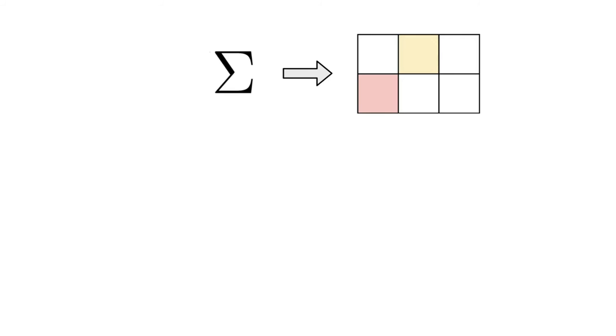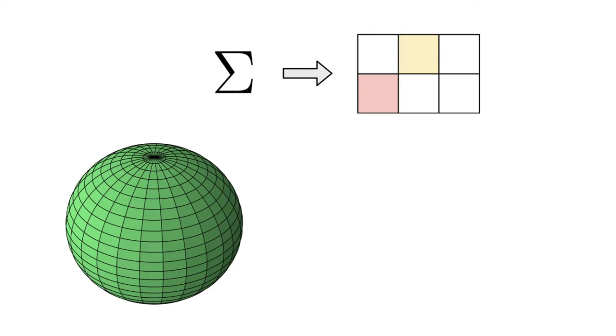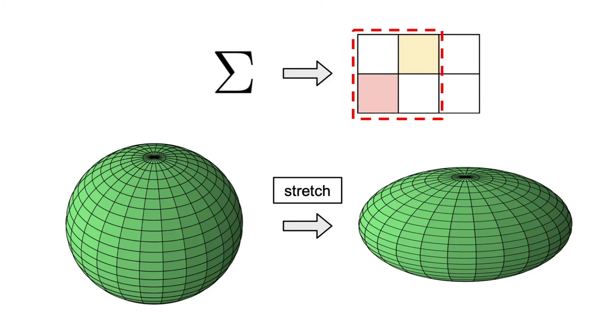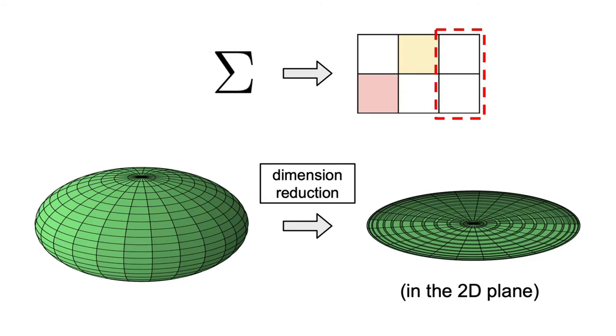On the other hand, if the Sigma matrix had the following form, so a 2x3 matrix, and we use the following sphere in the 3D space, we would again stretch along the x and y dimensions, and then remove the z dimension. Pretty cool, right?